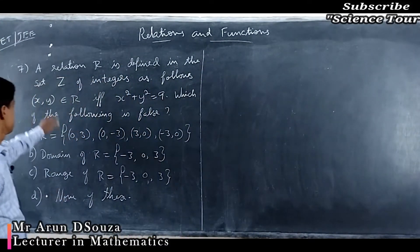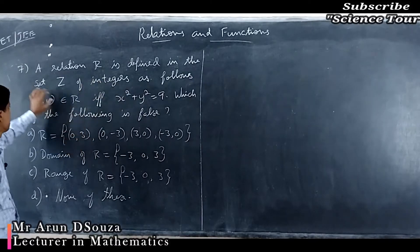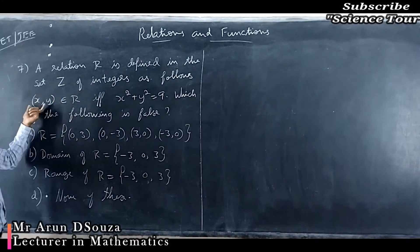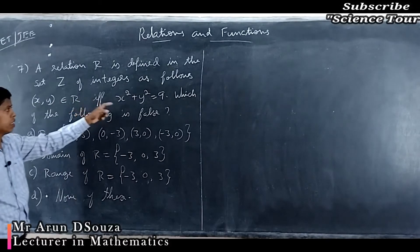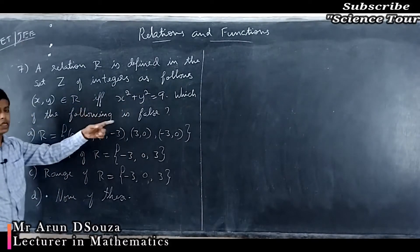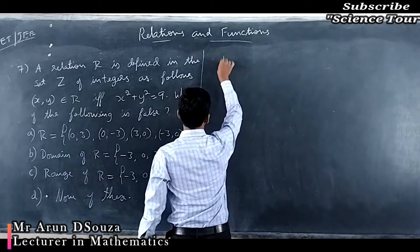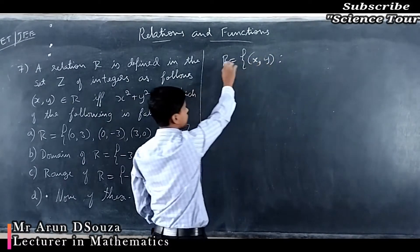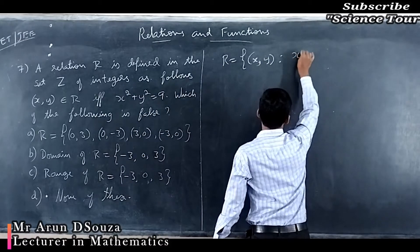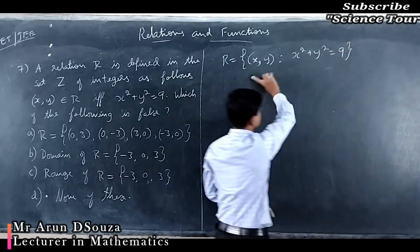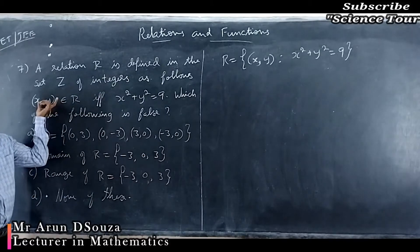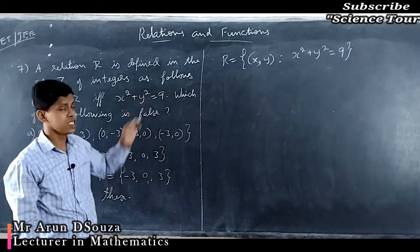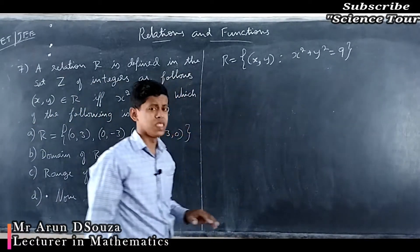Look at question 7. Relation R is defined on the set ℤ of integers (which includes negatives, 0, and positives) as: (x, y) ∈ R if and only if x² + y² = 9. We need to determine which of the following is false. In proper set-builder form this is written: R = {(x,y) : x² + y² = 9}, and both notations mean the same thing.